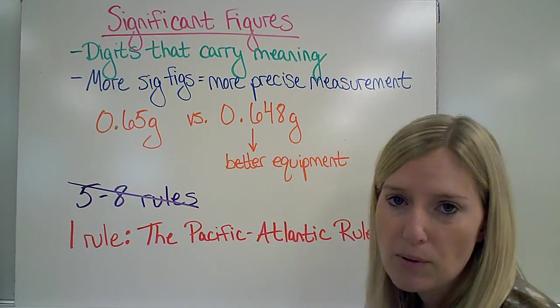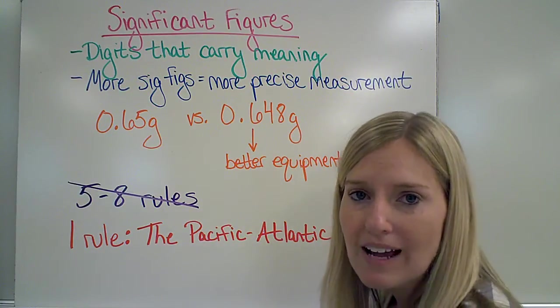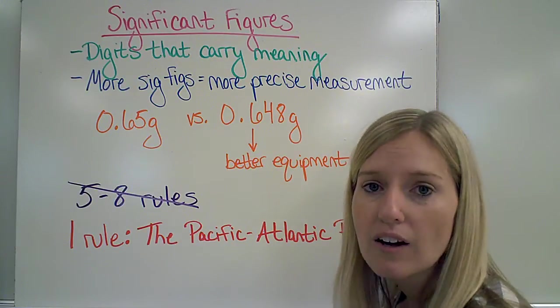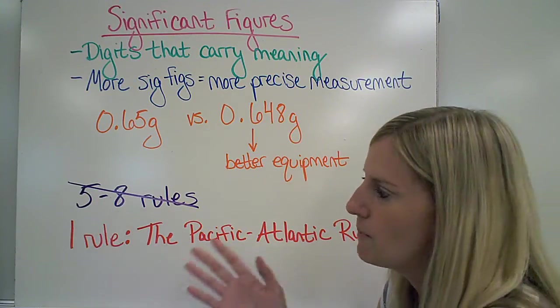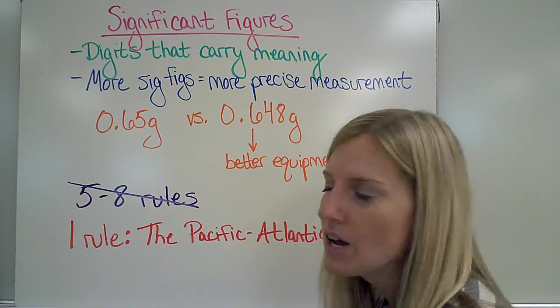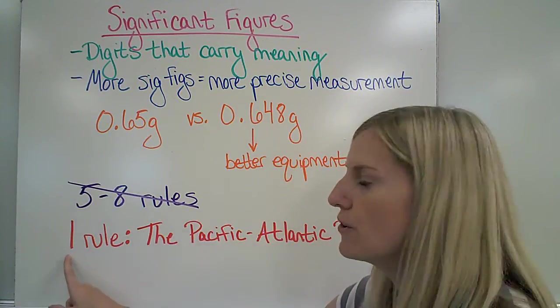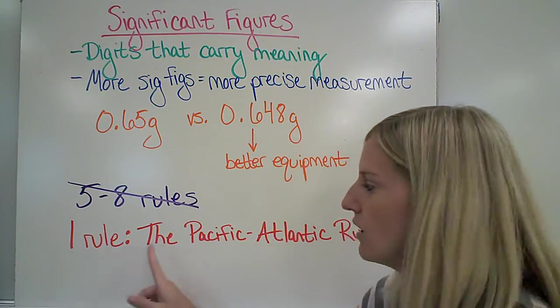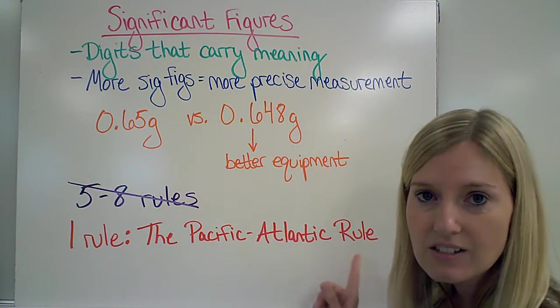Now, when we look at numbers or measurements, we need to determine how many significant figures there are. There are, depending on where you look, about five or eight rules that I could have you memorize, but we're not going to do that. We're going to focus on one rule, which is called the Pacific Atlantic Rule.